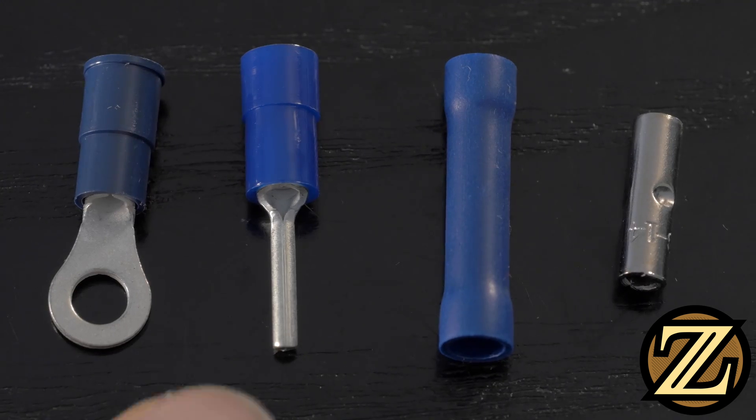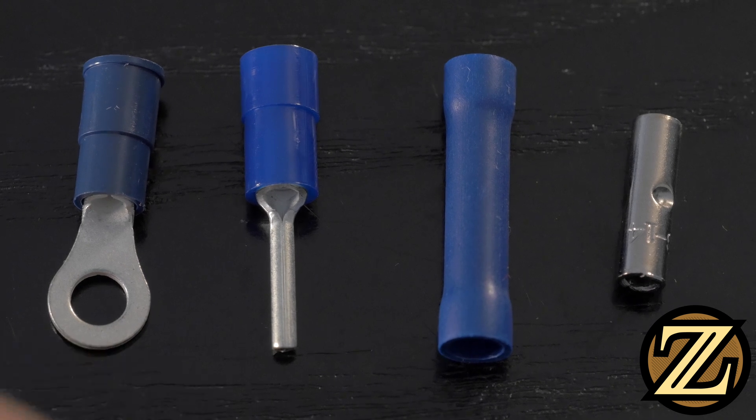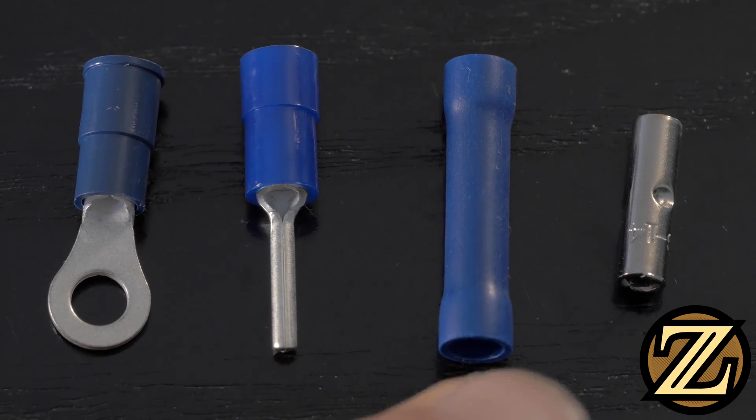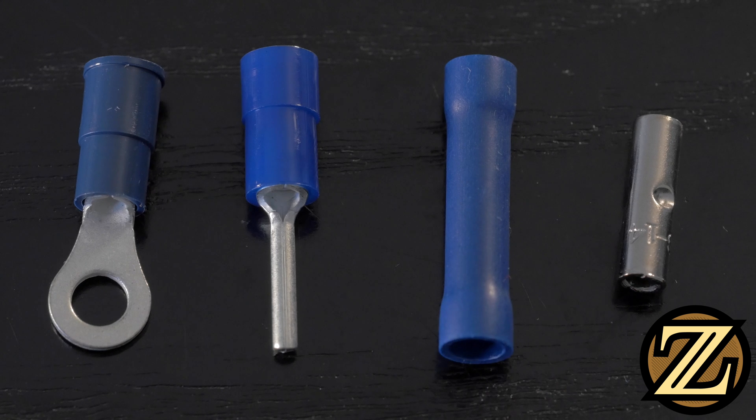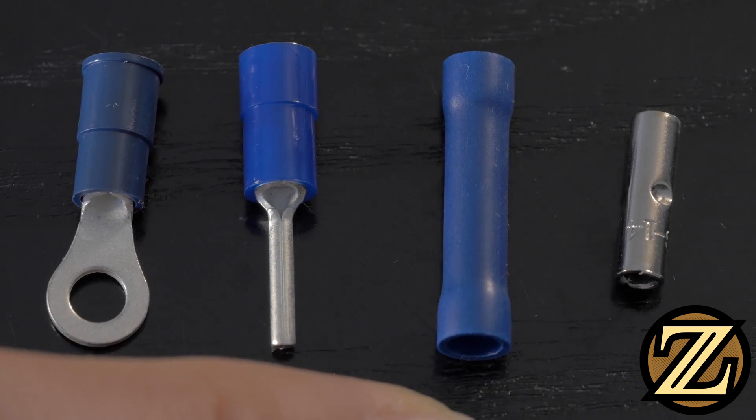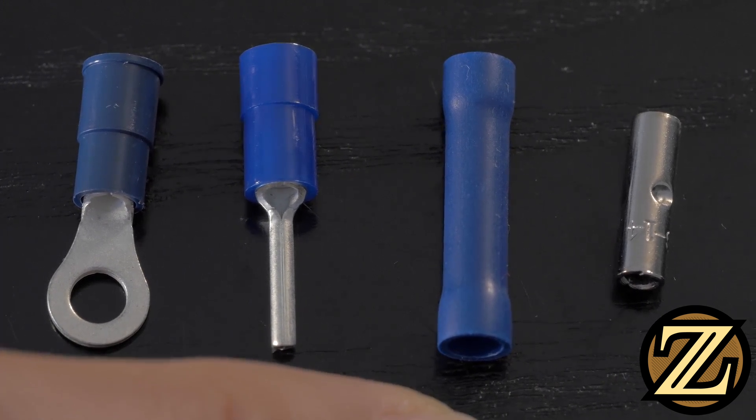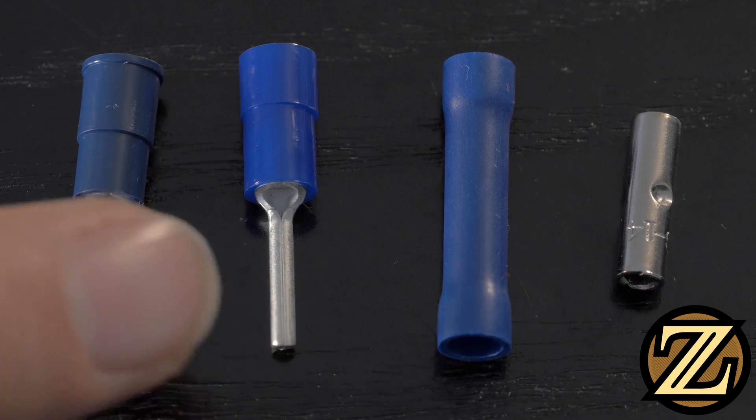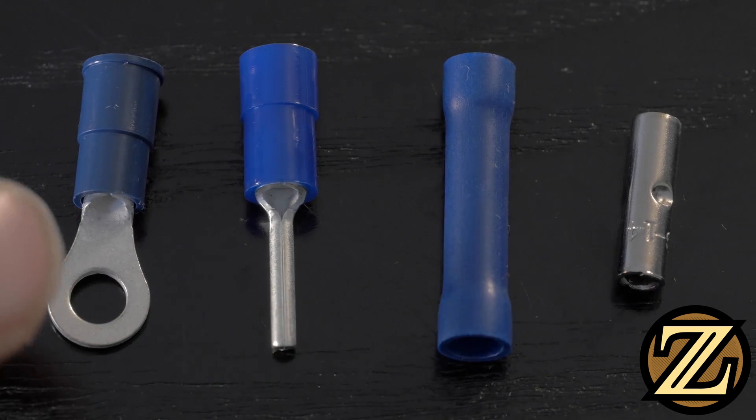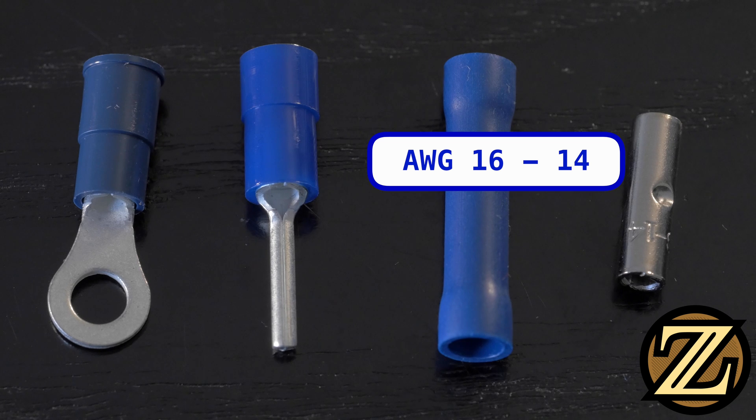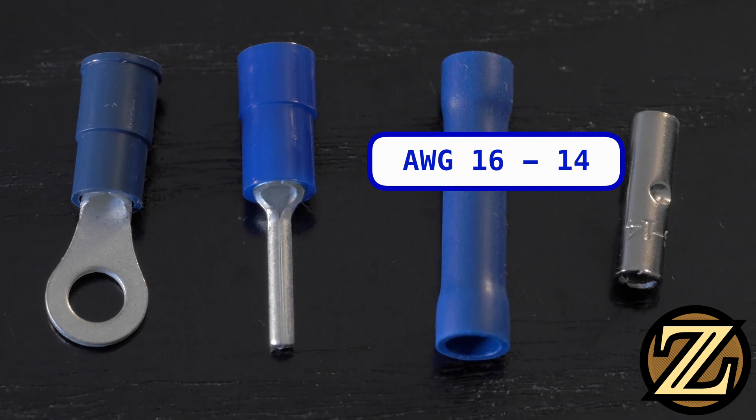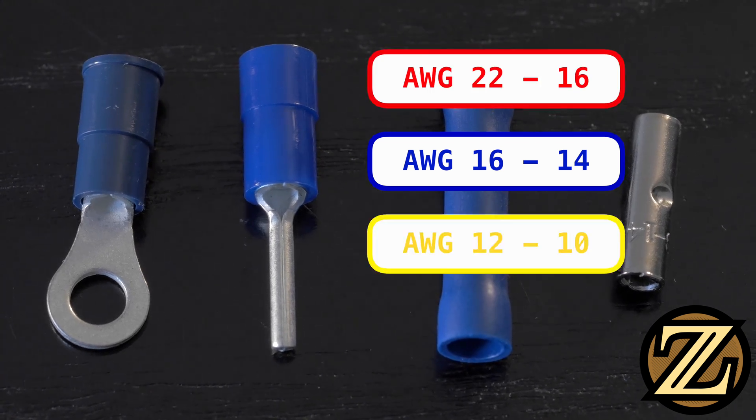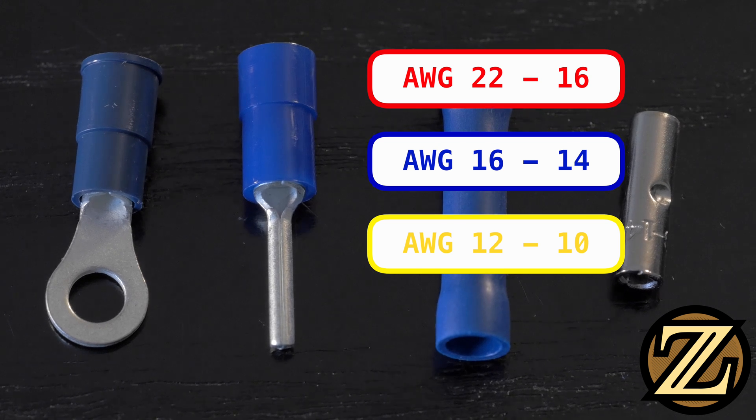Here we have four different crimp devices: a pin terminal, a ring terminal, an insulated butt splice, and an uninsulated butt splice. Notice how on all the insulated devices we see blue shielding. There's a reason for this, and it's to denote what size wire these devices are rated for. Blue is good for gauges 16 through 14, red is good for gauges 22 to 16, and yellow is good for gauges 12 to 10.